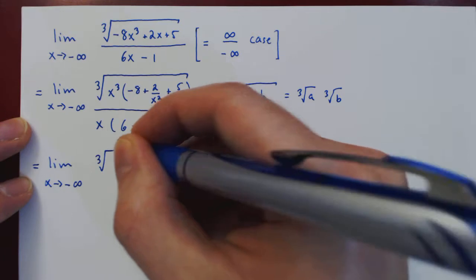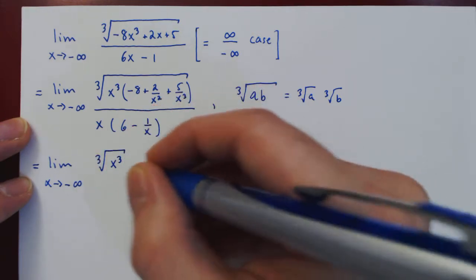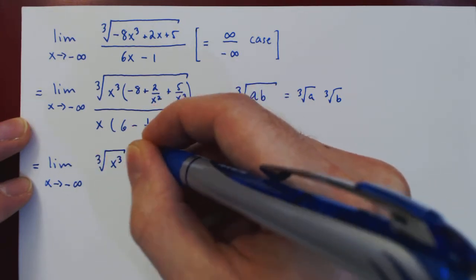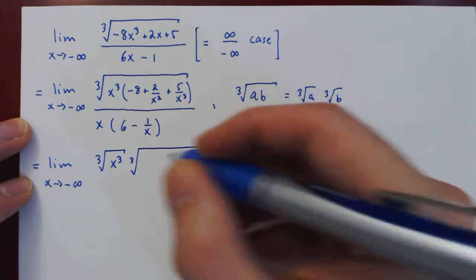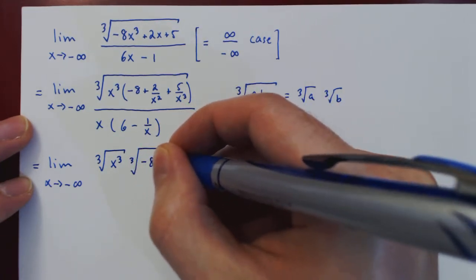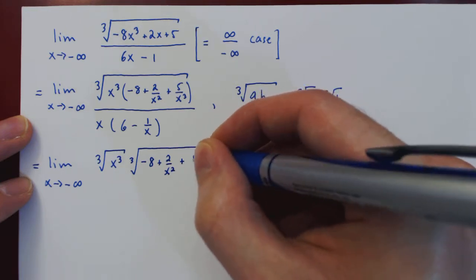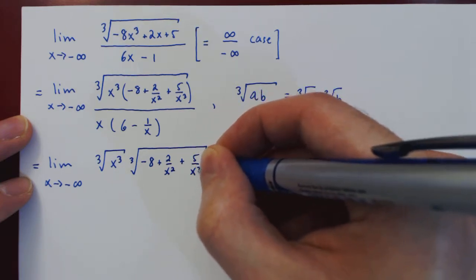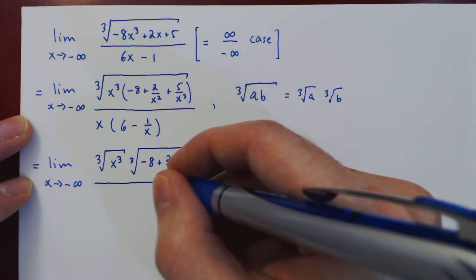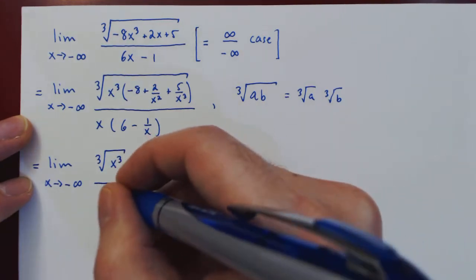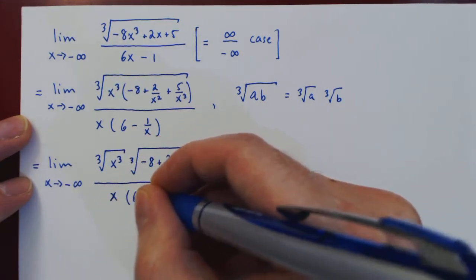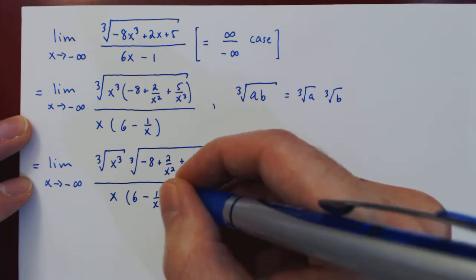The cube root of x cubed and then the cube root of the second term, negative 8 plus 2 over x squared plus 5 over x cubed, over—no changes here—x times 6 minus 1 over x.